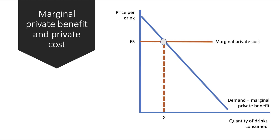Let's develop this concept of utility into that of marginal private benefit — the benefit to you as the consumer from the next unit consumed. We're also going to bring in marginal private cost, which is the internal cost to the consumer of buying and then consuming the next unit, indicated in this example by the price. So if the price of a drink is five pounds, the benefit-cost calculation indicates that consumers will be willing and able to buy two drinks.